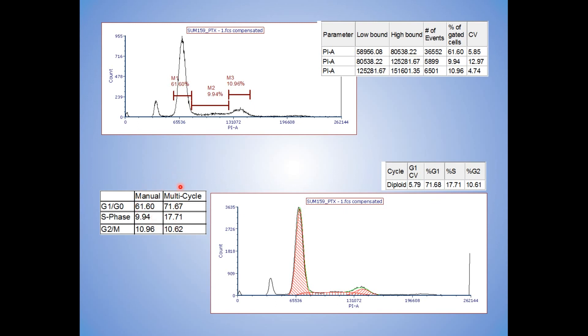Here's manual, the region, multicycle through the software. And you can see some marked differences in the G1, G0, and S. I have also seen differences in the G2M as well. But the differences here are remarkable. And if you're looking at a large number of samples looking for a subtle difference, you're not going to get there with this.